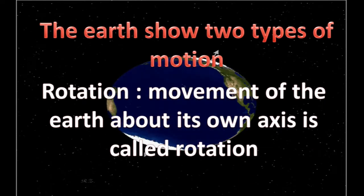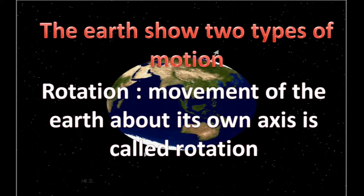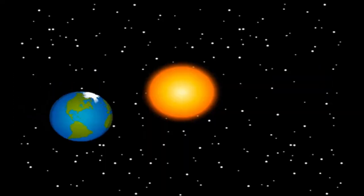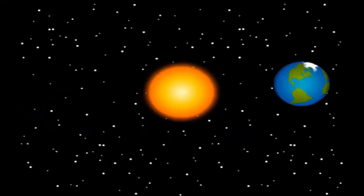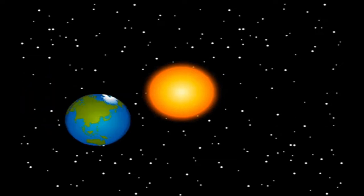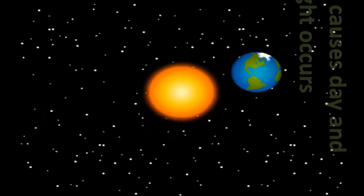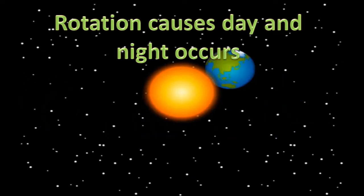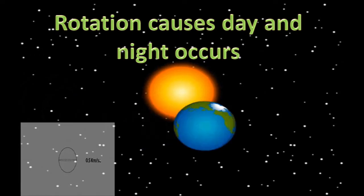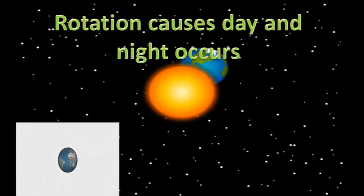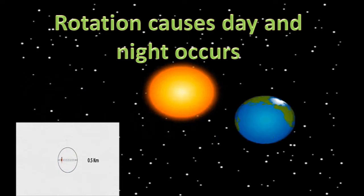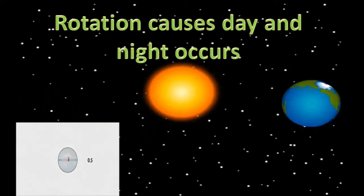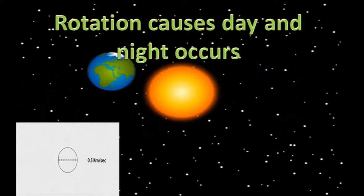Rotation: the movement of the earth about its own axis is called rotation. Rotation causes day and night. The speed of rotation is about 0.5 km per second.